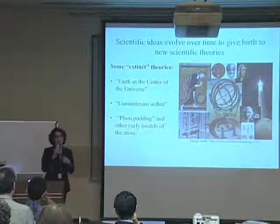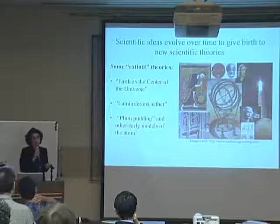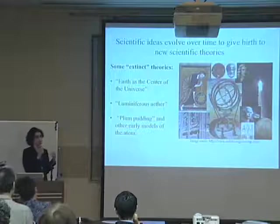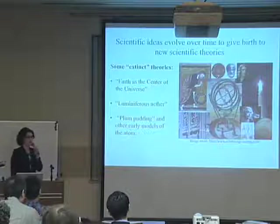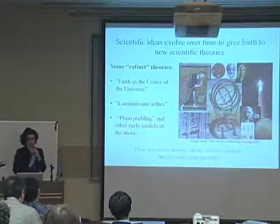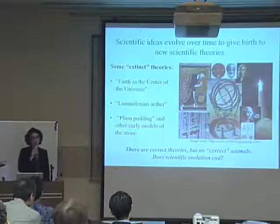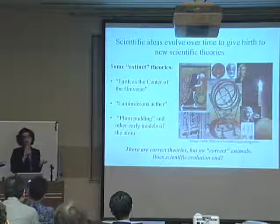Another example is the theory of luminiferous ether, which was supposed to be a medium in which light needed to propagate. We now know that is not necessary — light does not need a medium to propagate in. There are also many earlier models of the atom that became superseded. The plum pudding model is just one example. But as Professor Fushimura mentioned, the goal of evolution is not to deliver a perfect species, and certainly these theories were superseded because they were wrong.